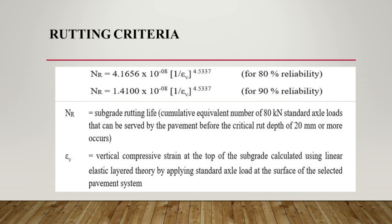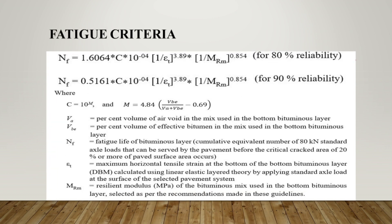If it is less than 20 MSA, 80% reliability equations can be used. Same as rutting, IRC has provided equations to calculate horizontal tensile strain, i.e. ET, at the bottom of the HMA. Here, MRM is the resilient modulus of the bituminous mix, which will be discussed in the next lecture with its determination for various layers.